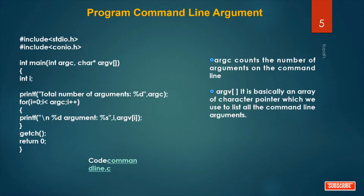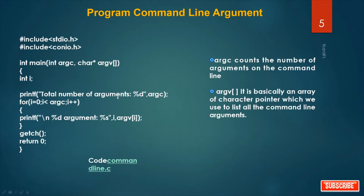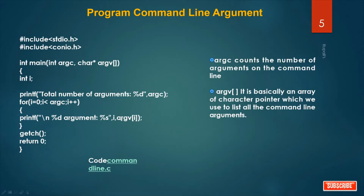Now let's see how command line arguments work. I write one program: int main with parameters int argc and char* argv. What is argc? Argc counts the number of arguments on the command line. If I want to print how many arguments were sent, I write: total number of arguments, %d, argc. Then to print the argument list, I start a for loop from 0 to less than argc and print the value of each parameter argv[i].